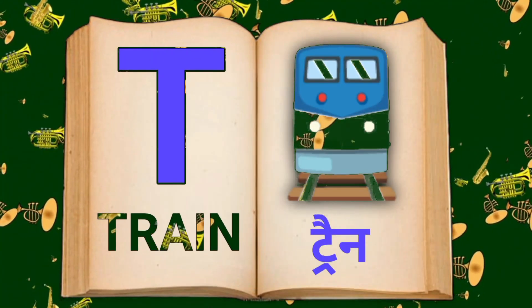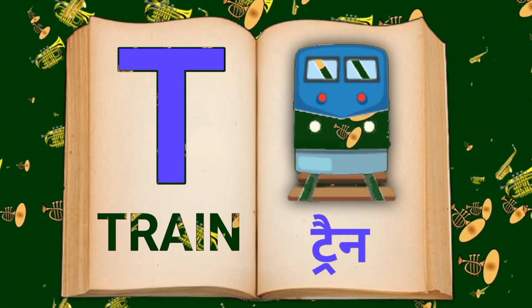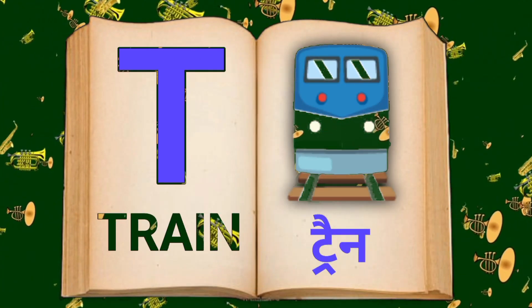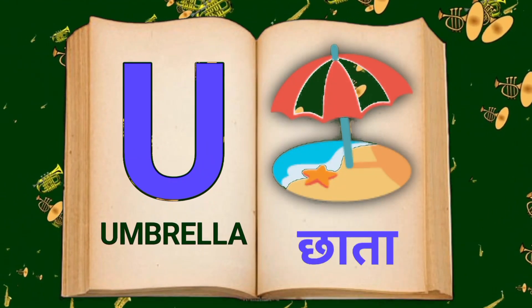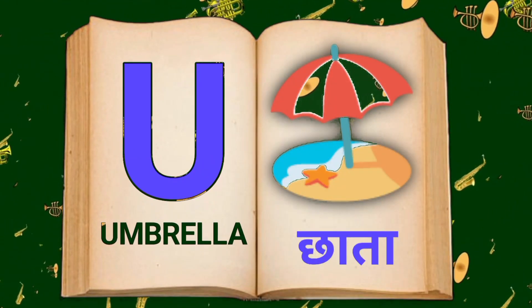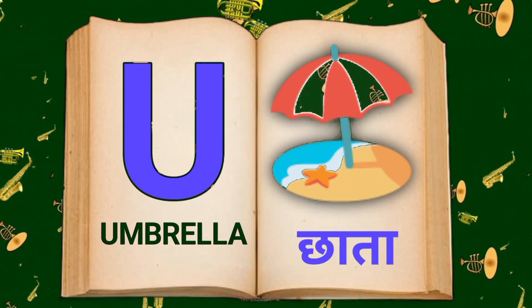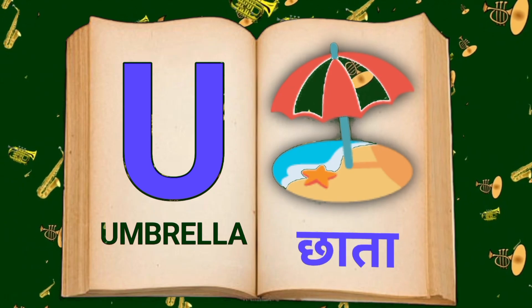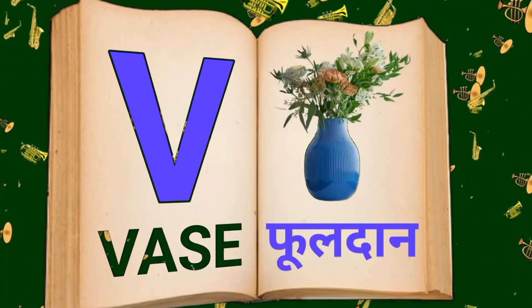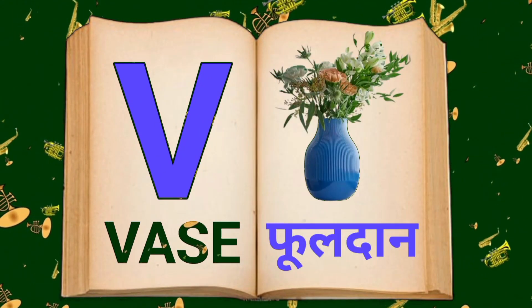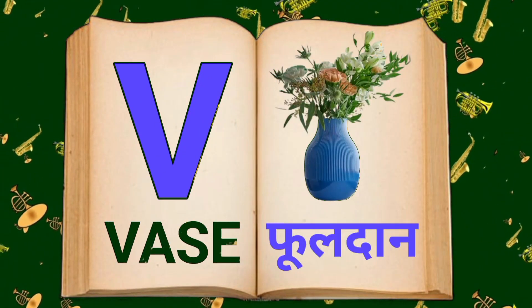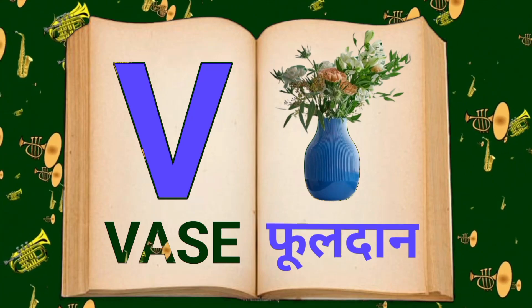T for Train, Train means train. U for Umbrella, Umbrella means chata. V for Vase, Vase means phooldaan.